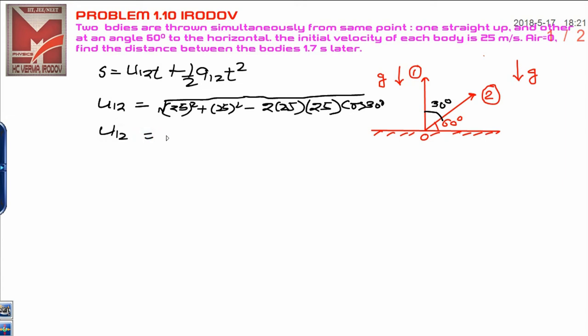Taking out common terms, you get 2(1 - cos 30°). This is the relative velocity of 1 with respect to 2.